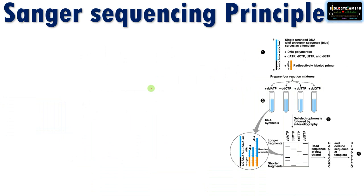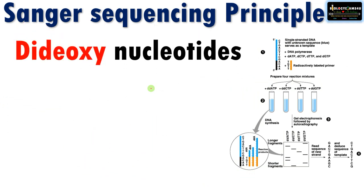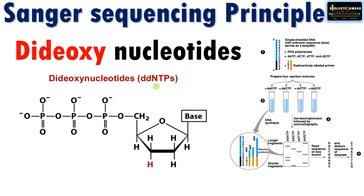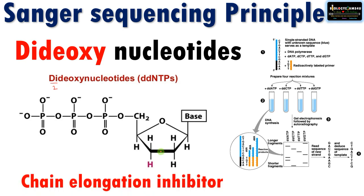Let's begin with the principle of Sanger's sequencing procedure. It involves the use of dideoxynucleotides (ddNTPs). In a dideoxynucleotide, oxygen is missing at both the second and third carbon positions — that makes it dideoxy. Normally in deoxyribose only the second position oxygen is missing, but in dideoxynucleotides the third position oxygen is also absent.